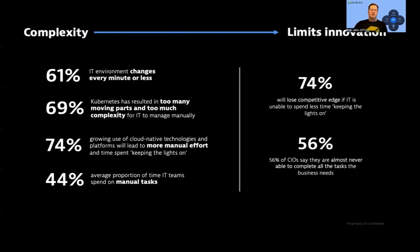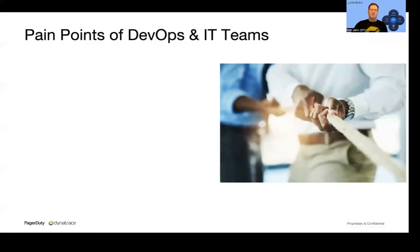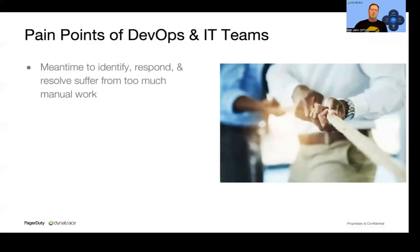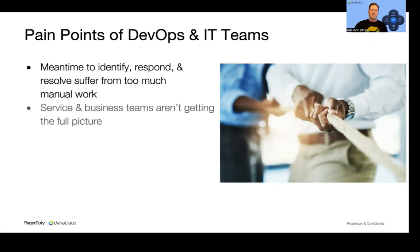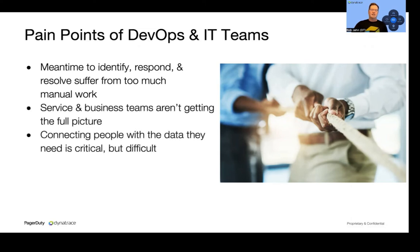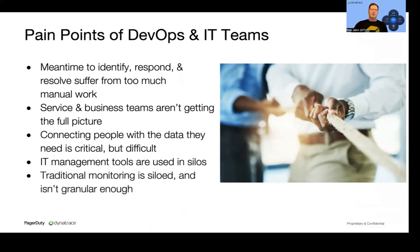We know that this needs to change, and that's why we're here today to address some of the pain points that many of you are feeling. A big part of this is the time spent to triage and find problems within these complex architectures — a lot of manual work looking at logs, dashboards, and different siloed tools, because we're just not seeing the big picture. It's important that we try to connect people together with context, understanding who needs to work on what, and get away from working in silo teams.